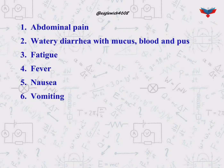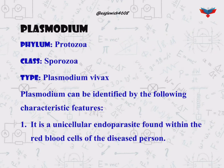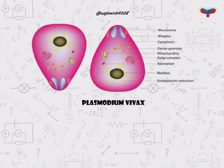Plasmodium vivax is a member of phylum Protozoa and class Sporozoa, which causes the disease malaria. The diagram here shows the Plasmodium vivax.